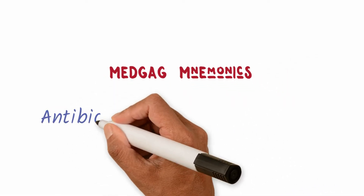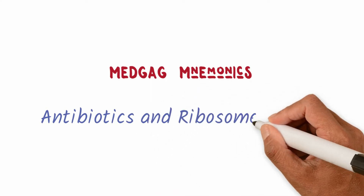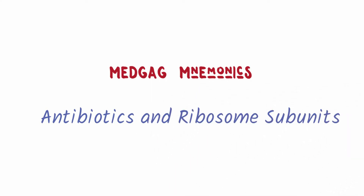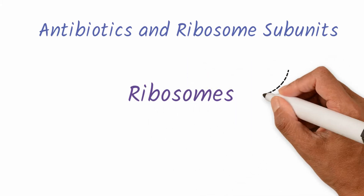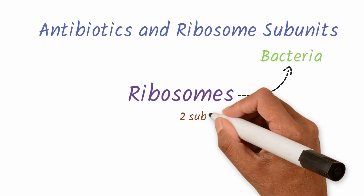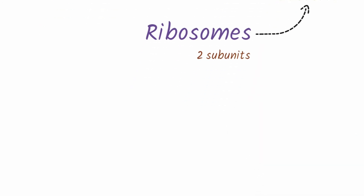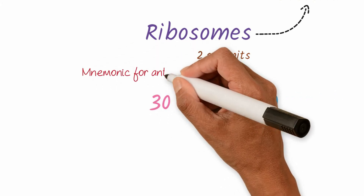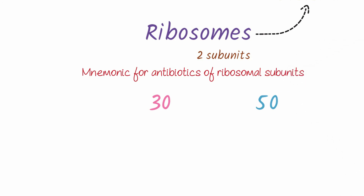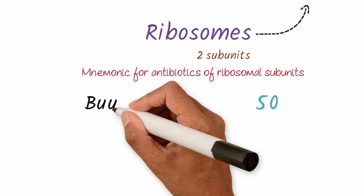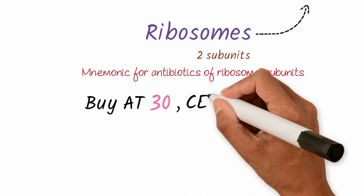This video is about mnemonics for antibiotics acting on different subunits of the bacterial ribosome. The bacterial ribosome has two subunits: the smaller subunit is 30S and the larger subunit is 50S. We can easily remember the antibiotics acting on each subunit with this simple mnemonic: 'Buy AT 30, Sale at 50.'